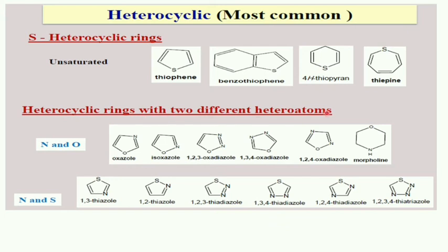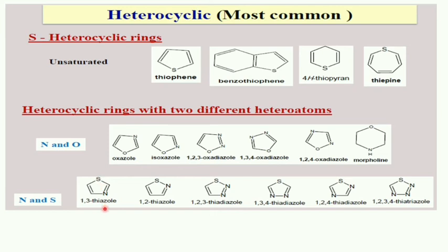Heterocyclic rings with two different heteroatoms: for rings containing nitrogen and oxygen — oxazole (oxa-aza-ole, 5-membered ring), isoxazole, 1,2,3-oxadiazole, 1,3,4-oxadiazole, 1,2,4-oxadiazole, and morpholine. The prefix 'ole' indicates the 5-membered ring system. For rings containing nitrogen and sulfur — thiazole (thia-aza-ole), 1,2-thiazole; 1,2,3-thiadiazole (two nitrogens present); 1,3,4-thiadiazole; 1,2,4-thiadiazole; and 1,2,3,4-thiatriazole. When comparing sulfur and nitrogen, sulfur receives priority, hence 'thia' comes before 'aza' in the prefix.